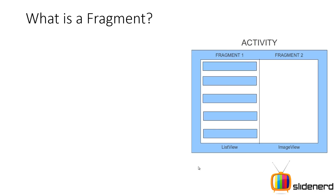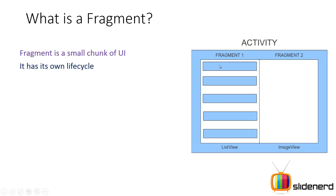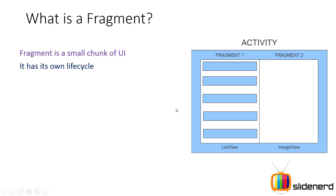Let's review what a fragment is. A fragment is a part of the user interface, to be very specific. Fragment 1 is a list view and Fragment 2 is an image view. Based on what the user selects in the list view, you can make changes in the image view within the same activity, without the user having to navigate to a different activity — and that is the best part about fragments.